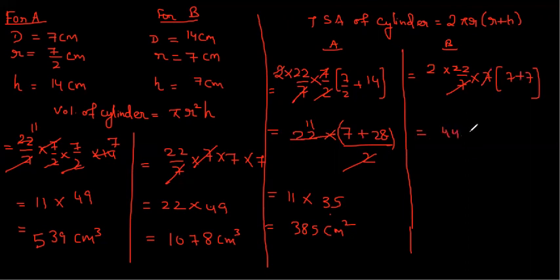44 multiply by 14. Okay, so 44 multiply by 14. 16, 56, 56, 616. So again, second wala is more. 616.